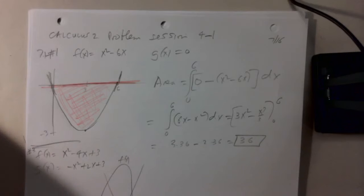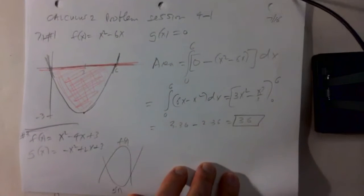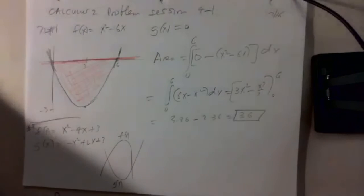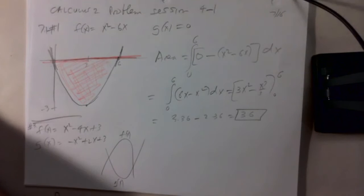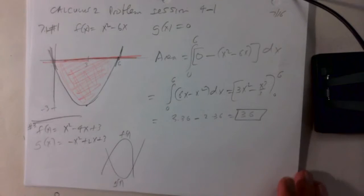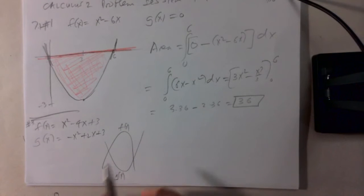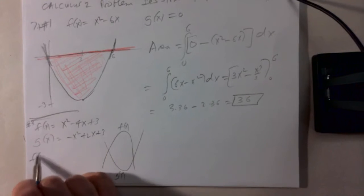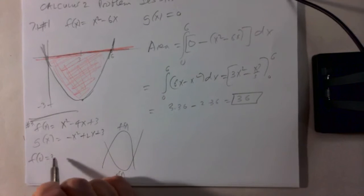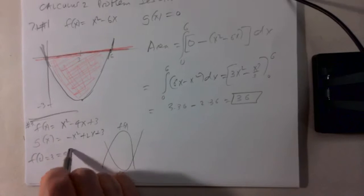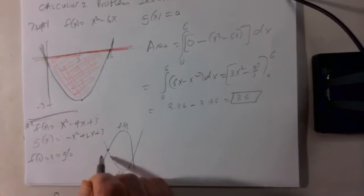Okay, so you have to unmute. I muted you because there's some noise. Can you see the graphs? Mm-hmm. Okay, so if you look at the graphs, you can tell where these two curves intersect. f of 0 is 3, and g of 0 is 3, so this is the point x equals 0.